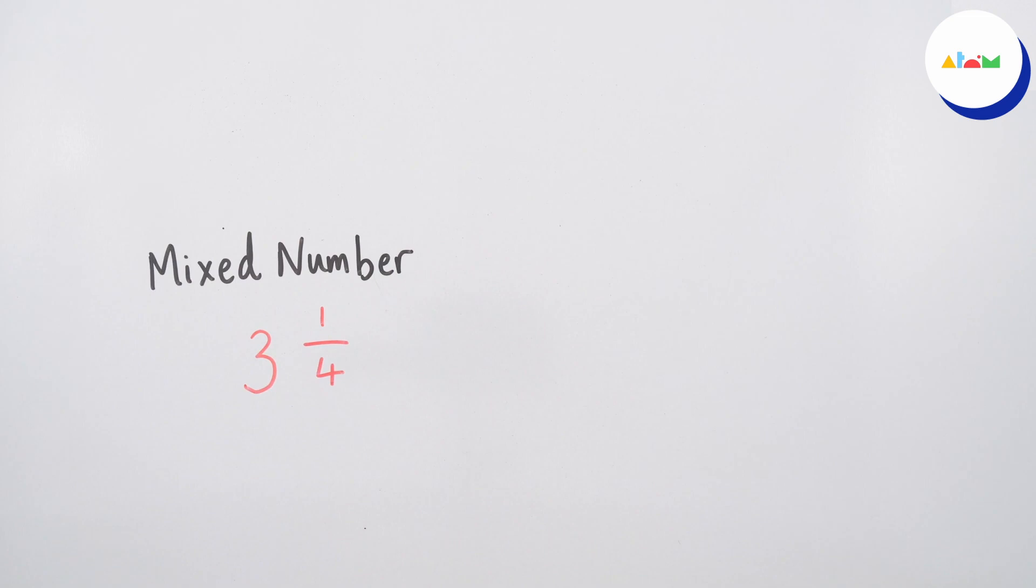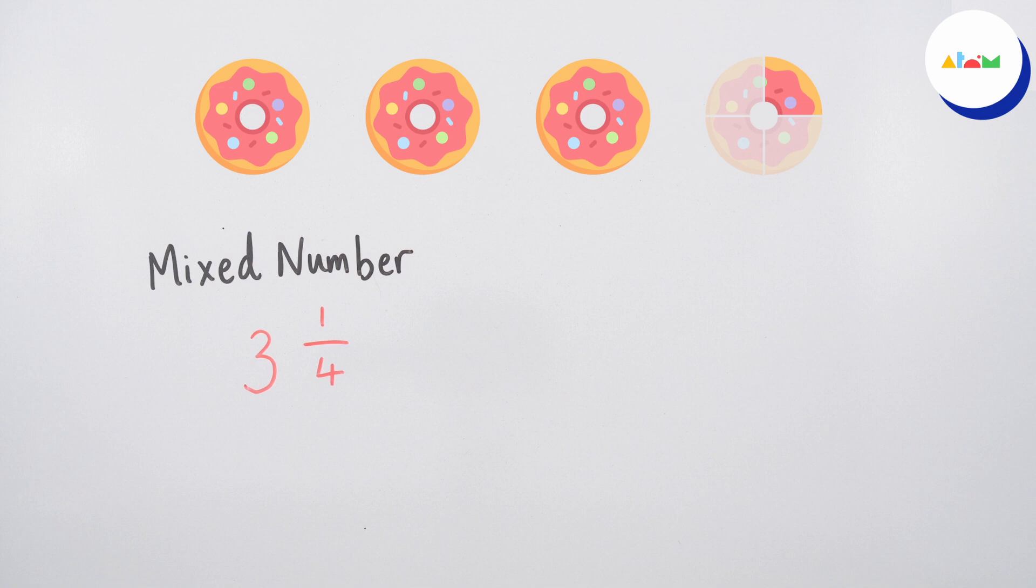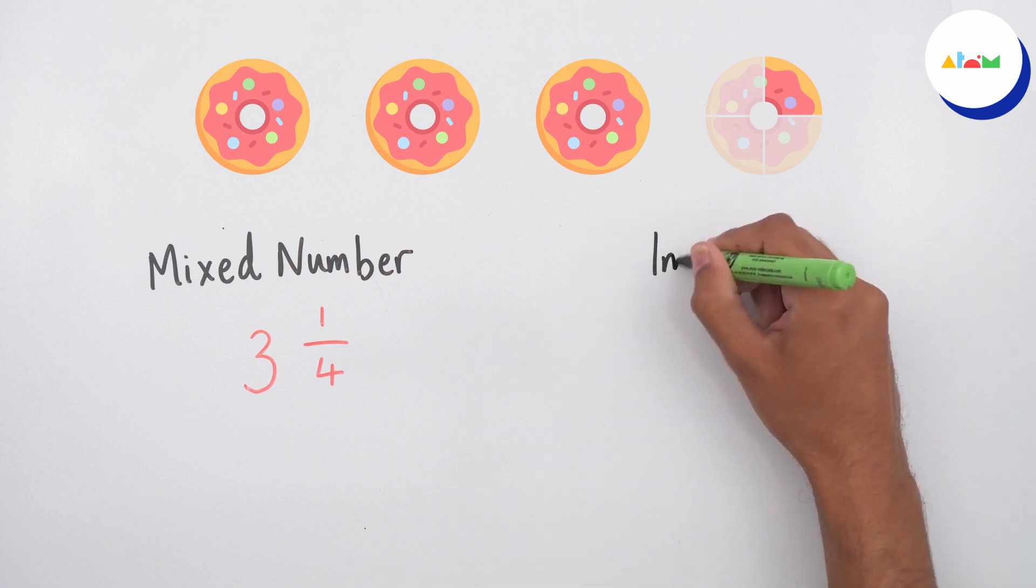For example, three and one quarter is a mixed number. Imagine we had three whole doughnuts and one quarter of a doughnut. Could we write this as an improper fraction?